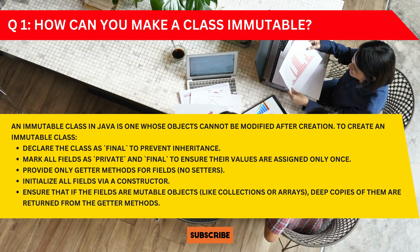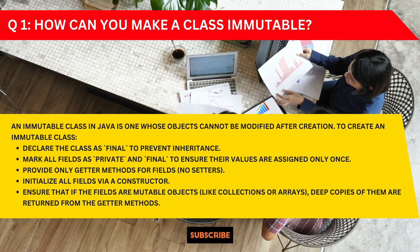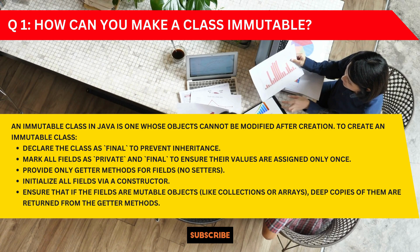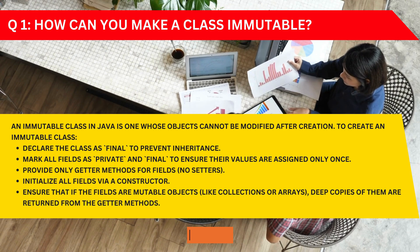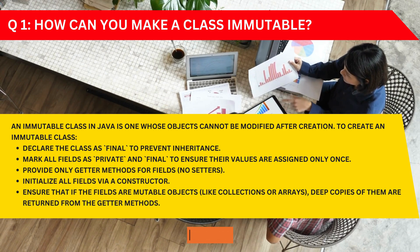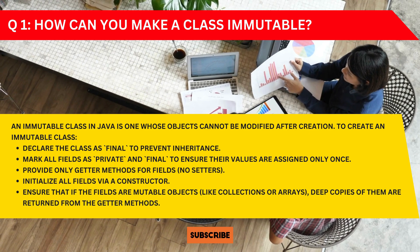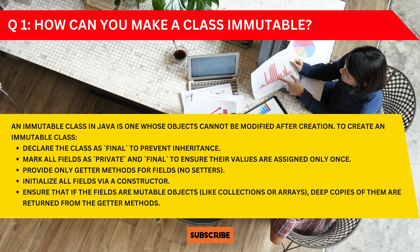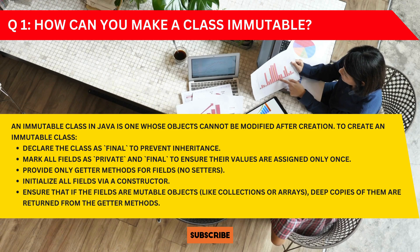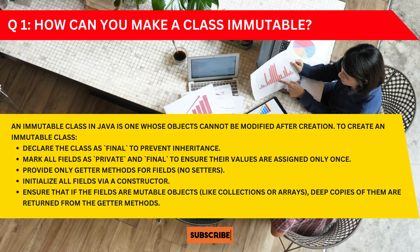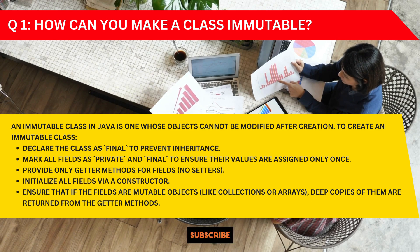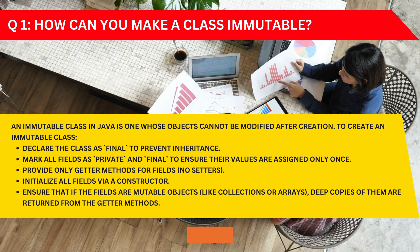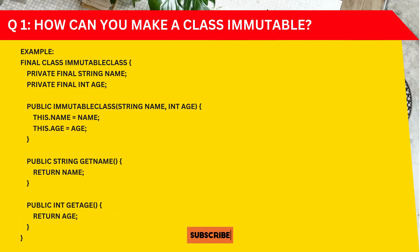First, declare the class as final to prevent inheritance. Second, mark all fields as private and final to ensure their values are assigned only once. Third, provide only getter methods for fields and no setters. Fourth, initialize all fields via a constructor. Fifth, if fields are mutable objects like collections or arrays, return deep copies of them from the getter methods. A code snippet is provided here for your better understanding.